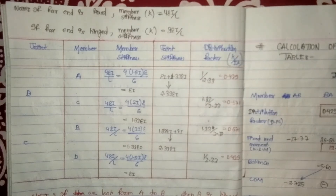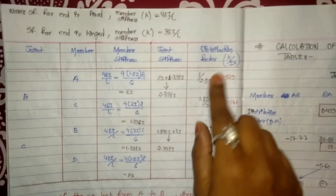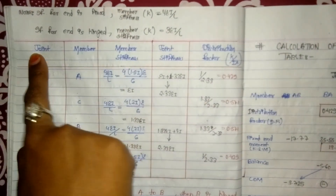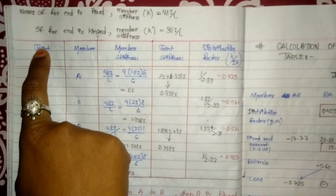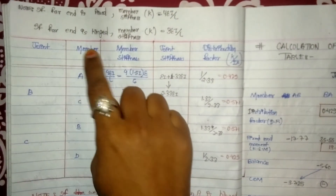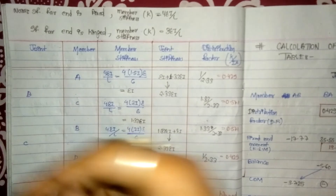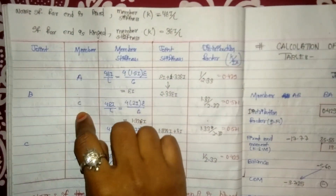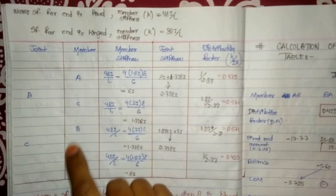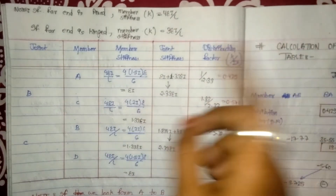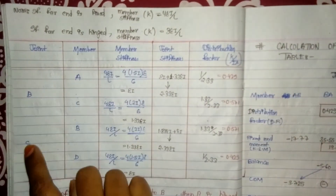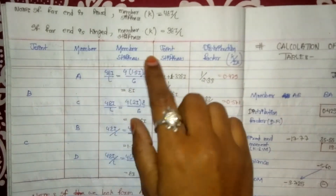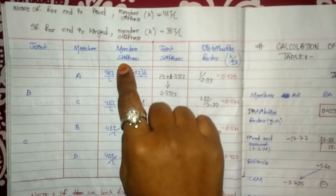For the distribution factor table, I have made a table which consists of joint, member, and stiffness. Joint B connects to points A and C, and joint C connects to B and D. So the members are BA, BC, CB, and CD.